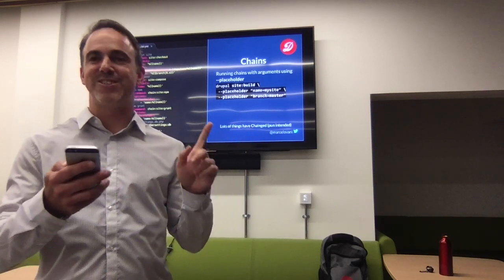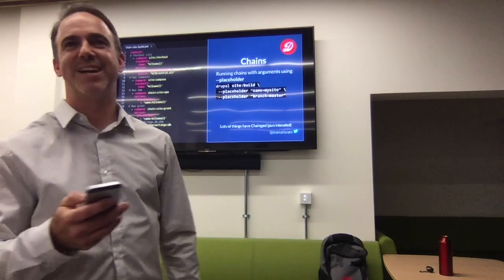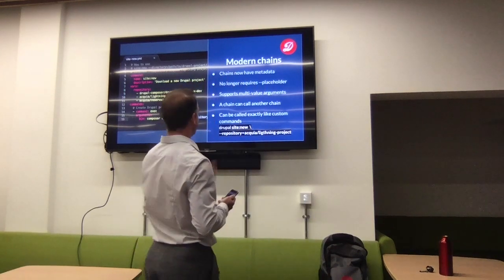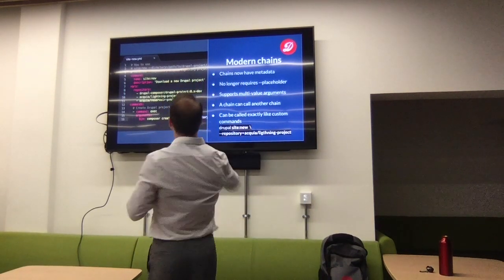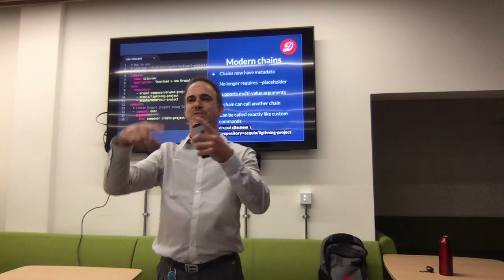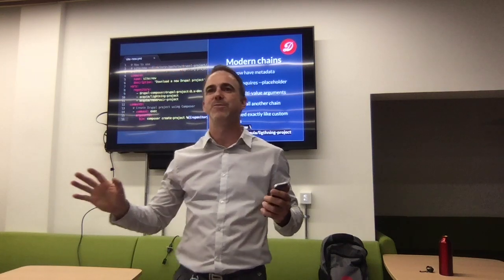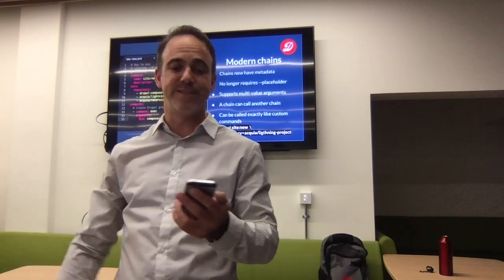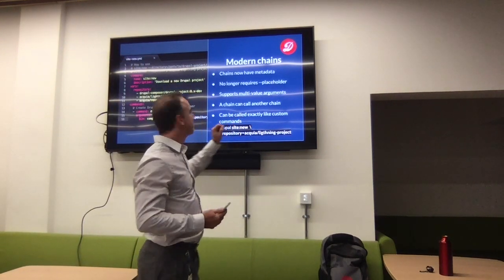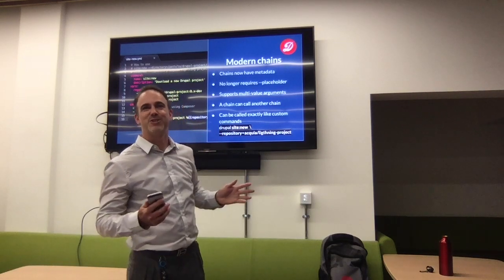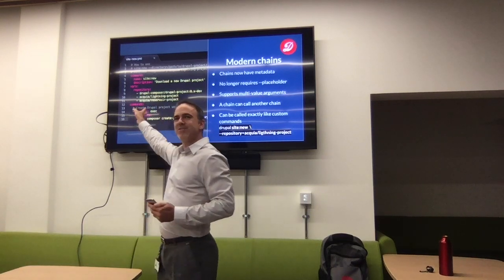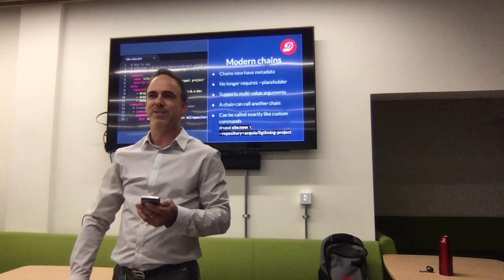But loads of things changed — pun intended. Modern chains now have metadata, which means a name and description are defined in the file. This is what shows when you see the list of chains, so the filename is no longer relevant. It no longer requires that inline placeholder syntax and it supports multi-value arguments. For example, you can have a repository option — when you run the command, you can choose which repo you want to use. A chain can also call another chain.